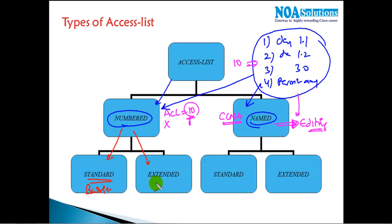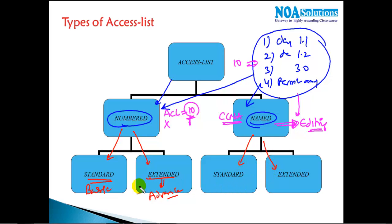The main classification of ACLs is standard and extended. Standard ACL is basic filtering; extended ACL provides more advanced filtering options. A standard or extended ACL can each be either numbered or named — that is just one category.